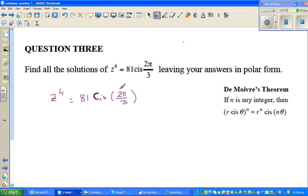This is in radians, so I would like to change this into degrees first and then come back to write in radians. So z to the power of 4 is 81 cis, and pi is 180, so 2 times 180 over 3. This is 360 divided by 3 which is 120, so this is 120 degrees.